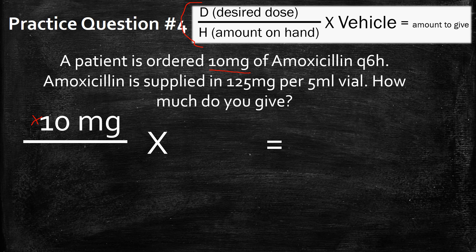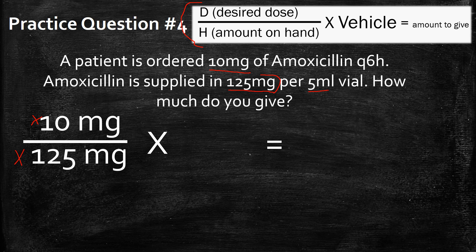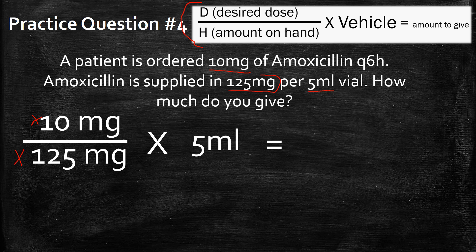Next part is the amount on hand — how much does wherever you're working have available? Well, they have it available in 125 milligrams, so we're going to put 125 right here. Next, what's the vehicle? If you were to give somebody 125 milligrams, you'd have to give them 5 milliliters. So the vehicle is going to be 5 milliliters, and we'll put that right here.